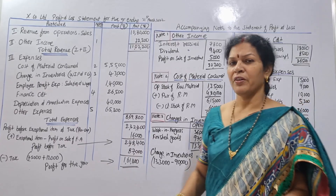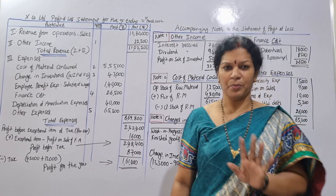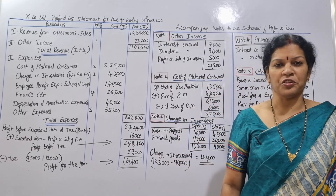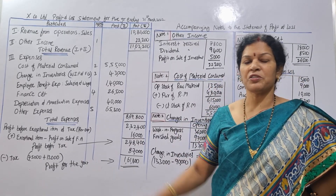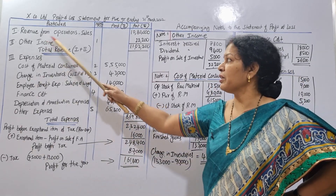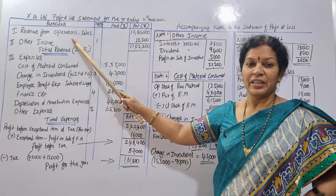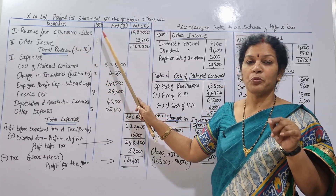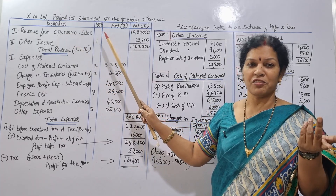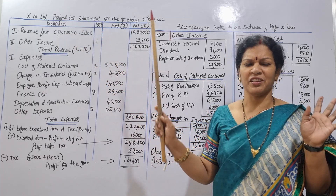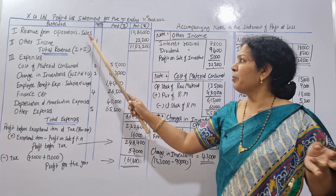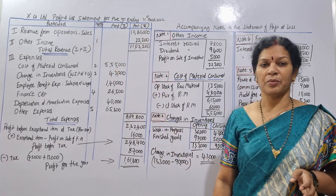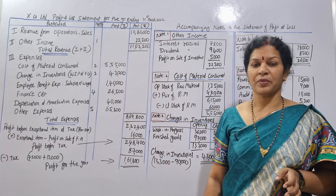Now let's fill the format. The first item is revenue from operations. Here we don't have a working note for sales returns, so we enter sales directly. Then we have the sales return deducted in the outer column.